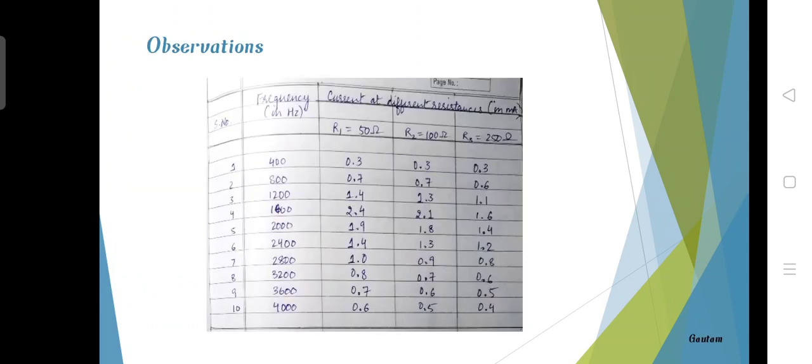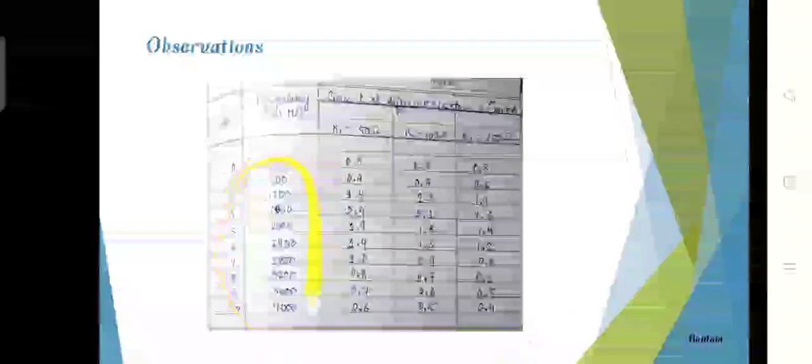The observation here is noted. The frequency of the circuit is noted there, and the resistances are noted here. When we plot these observations on the graph, we can see curves. The curves are like this: upward increasing and then decreasing down below.